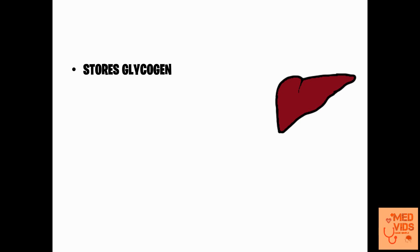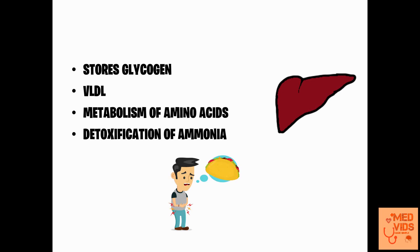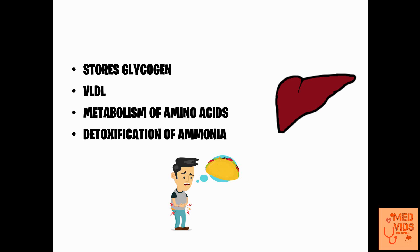The liver stores glycogen from glucose and releases fatty acids into the circulation in the form of very low density lipoprotein, also called VLDL. It also helps in the metabolism of amino acids and aids in detoxification of ammonia. In starvation, the liver forms glucose by glycogenolysis and gluconeogenesis. Importantly, even though the liver produces ketone bodies during starvation, it cannot use those ketone bodies for its own energy requirements.